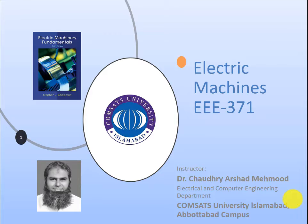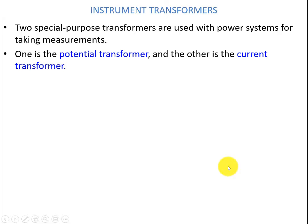In today's video we will look at a small topic: instrument transformers. Normally we have two special purpose transformers used in the power system for measurements — the potential transformer, which is used to measure the voltage levels at different points in the power system, and the current transformer, which is used to measure the currents at different points in the power system.